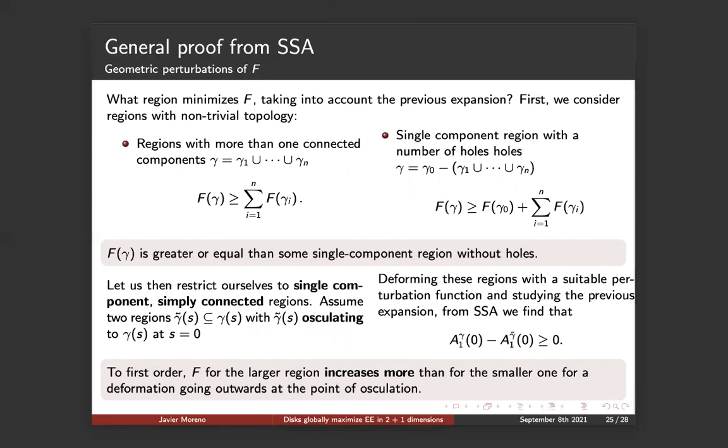Now that we have said that, we have to decide what type of region can provide an F minimum. Because of that, we are going to first consider what happens in the case of non-trivial topology. We can either have regions with more than one connected component in which we check that F is greater or equal than the sum of the individual ones. And on the other hand, if our region has holes, we have also to take into account that the holes have the boundaries. So F of gamma will be greater or equal than the F of this region plus the one of the holes. So in either case, F of gamma is greater or equal than some single component region without holes. So we're going to restrict ourselves to that: regions single component, simply connected.